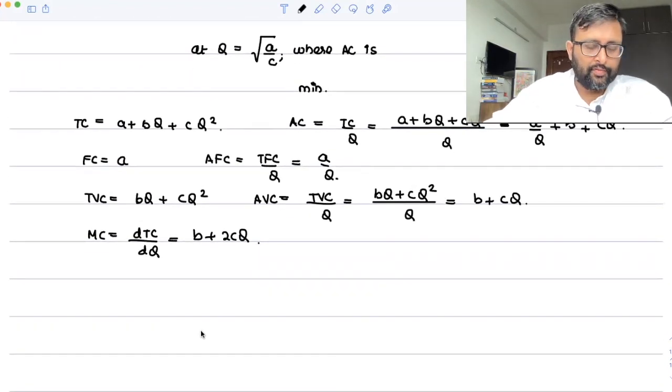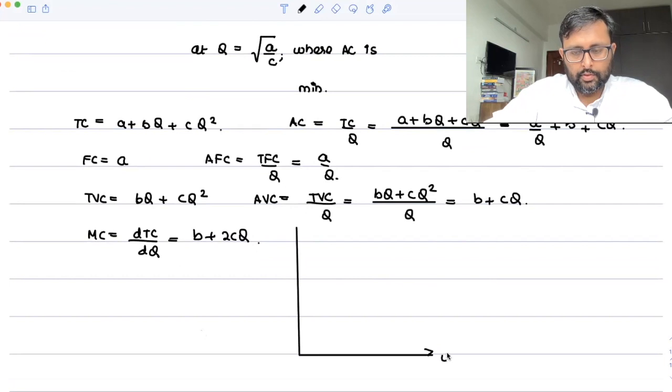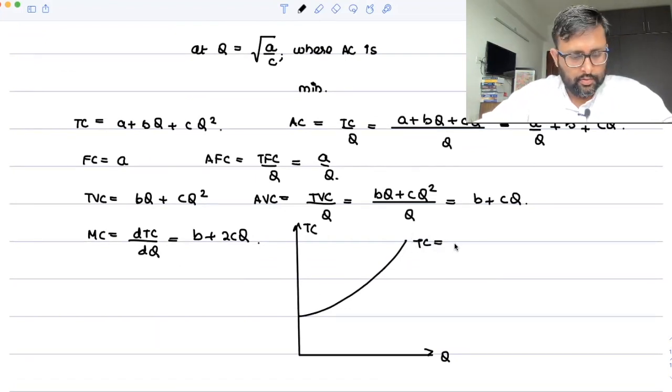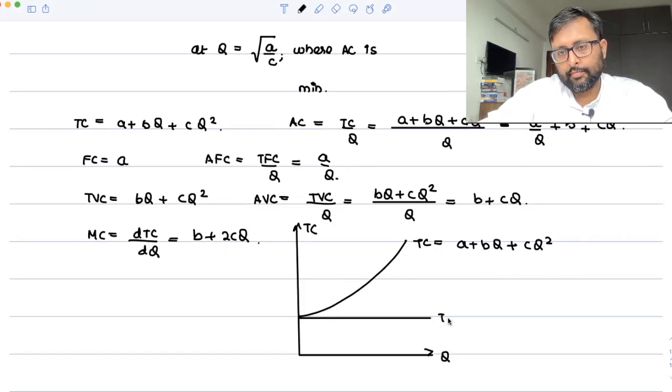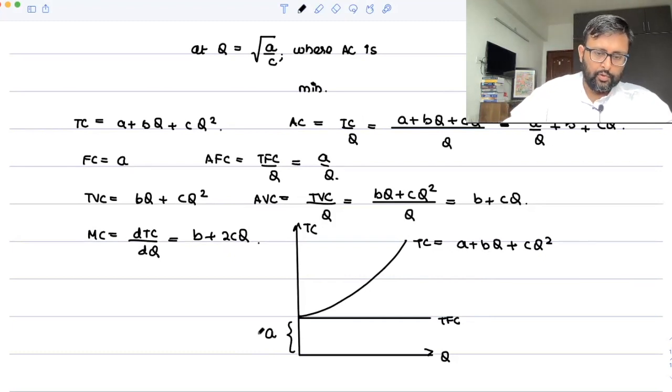So this way, you can just think of it like this. So you have q here and TC here. So it's like a quadratic function: a + bq + cq². So here, this is nothing but TFC. That is the TFC part. Anyways.